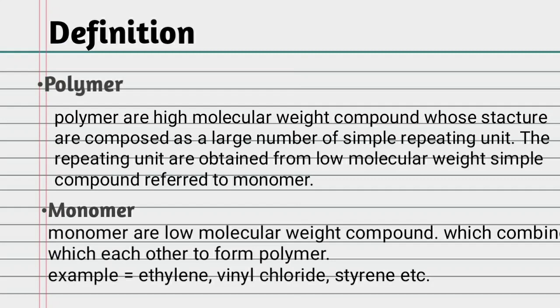Polymers are high molecular weight compounds whose structures are composed of a large number of simple repeating units. The repeating units are obtained from low molecular weight simple compounds referred to as monomers. Monomers are low molecular weight compounds which combine with each other to form polymers. Examples include ethylene, vinyl chloride, and styrene.